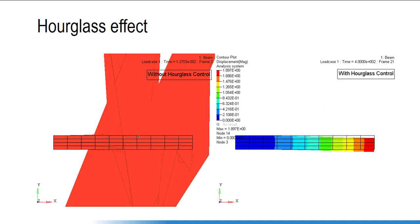This is the initial beam component before deformation. When some load is applied on this edge, the beam deforms — those red things are the deformed elements. By applying a limited load like 1 Newton or 100 Newton on steel material, such deformation should never occur, but if we have the hourglass phenomenon — a model having hourglass energy — such excessive deformation will take place.